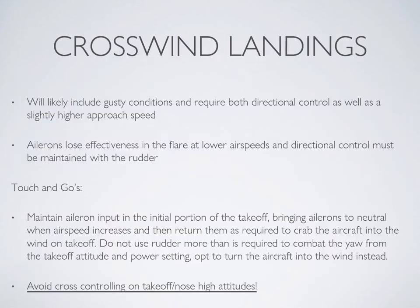When fighting a crosswind, you'll be slightly banked into the wind and applying opposite rudder to prevent the nose from following. You will likely have a slightly higher approach speed and therefore your controls will be slightly more effective on short final. If doing touch and goes, maintain that aileron input at the initial touchdown but as the aircraft picks up speed bring them back to a more neutral position. Once you leave the surface, get that aileron input back into the crab. Avoid cross-controlling with nose high at low airspeeds as it can cause an excessive amount of drag.